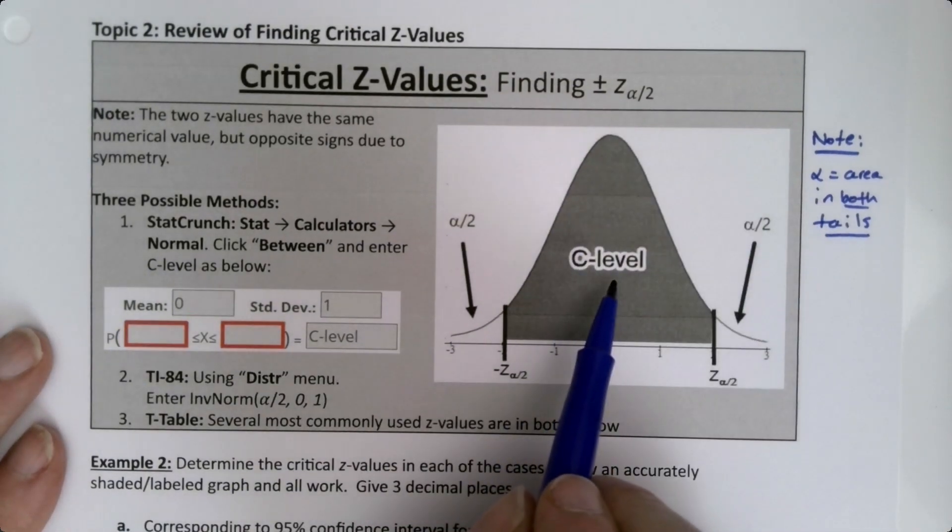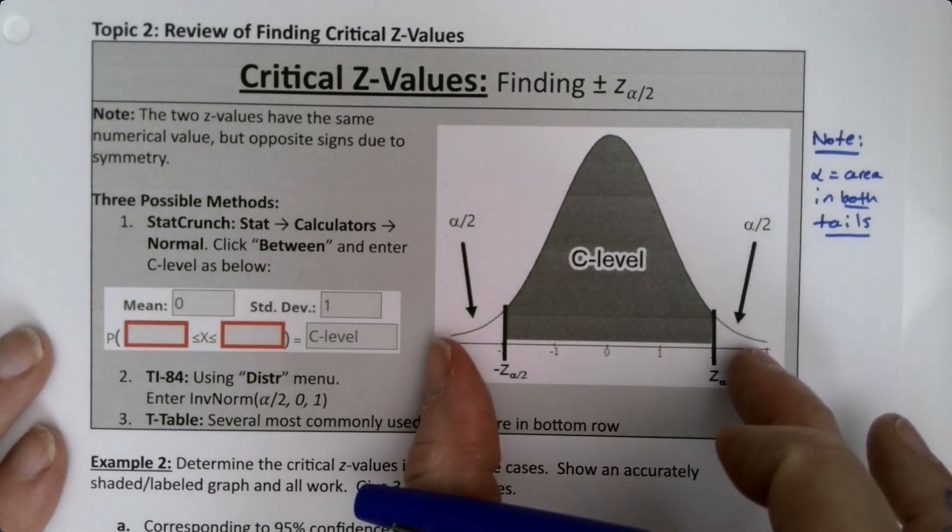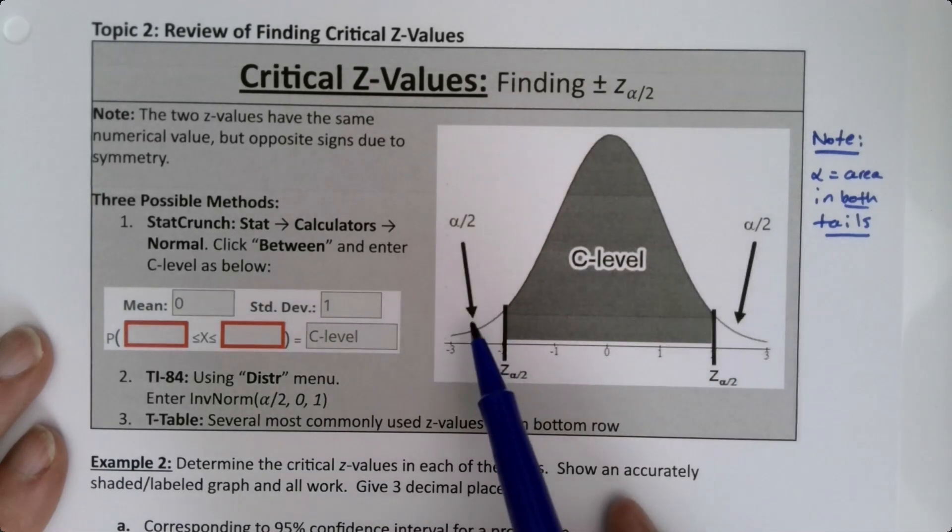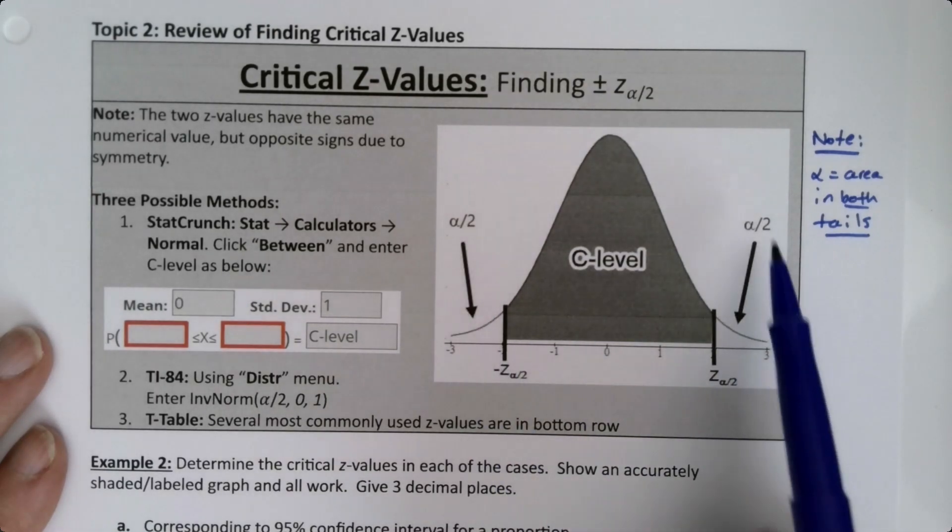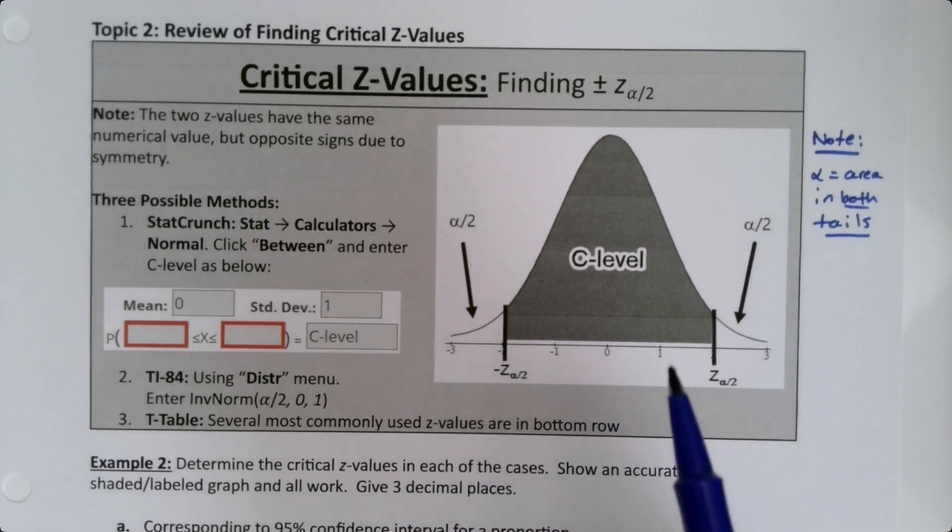And your confidence level is the area in the middle. So if alpha is the area in both tails, because that means together they add up to 100%, then each of these is alpha divided by 2. That's where that comes from. So this area over here would be alpha over 2, and this area over here would be alpha over 2, and together they'd make alpha.